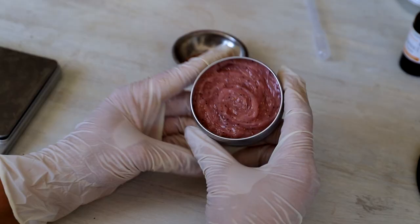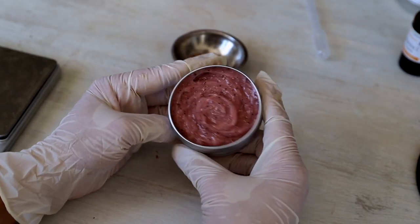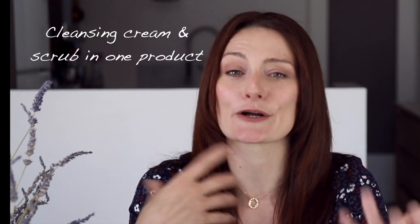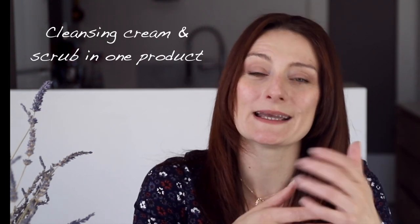In this video I want to share with you the recipe of this beautiful self-emulsifying body scrub. It has very nice and creamy and silky texture and when you apply it on your wet skin it turns into cream. So actually it's two in one because it helps you to exfoliate your skin but also it takes care of the skin. It's like cream and scrub in one product.